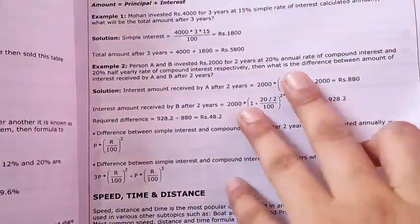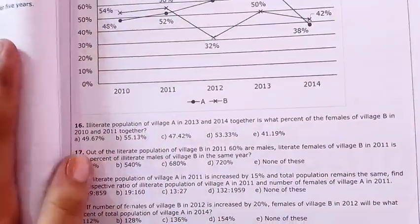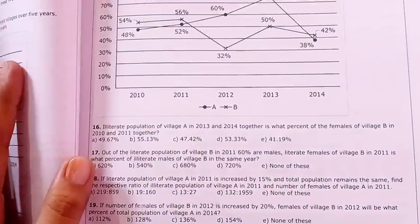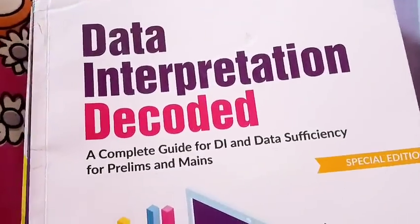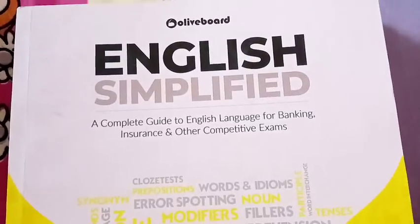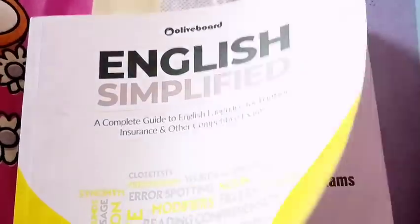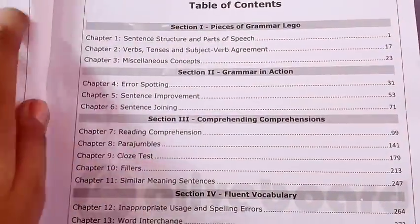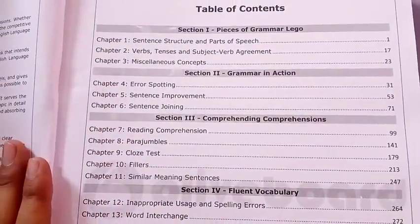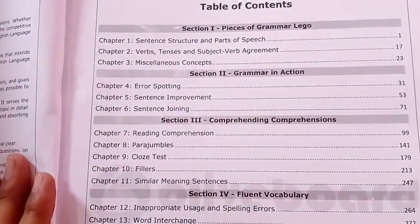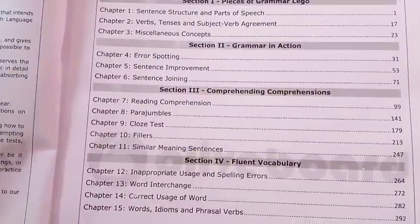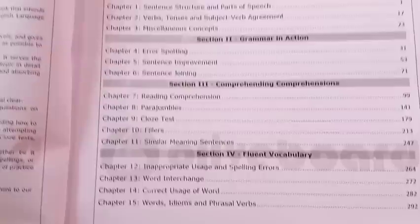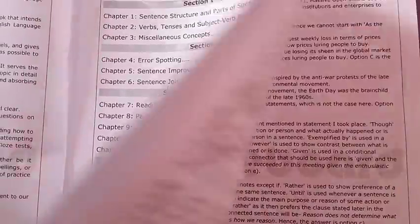In this book, DIs are based on arithmetic mainly, so it is for mains level. If you want to practice on a daily basis, then this book is really good. The third book is English Simplified. This book contains basic chapters of english if you are a beginner and need basic english coverage. It contains all the basic chapters - errors, para jumble, close test - and in the last it contains vocabulary also.